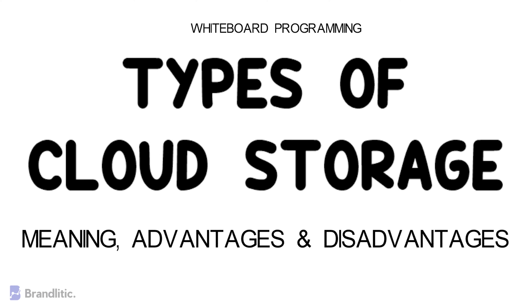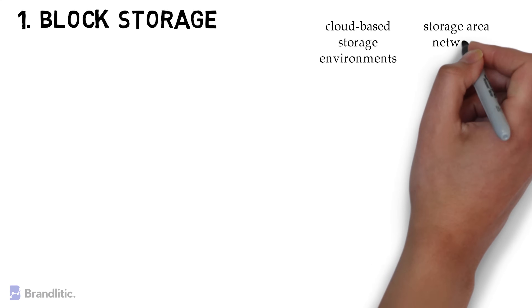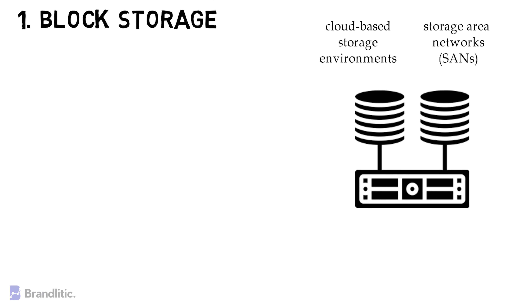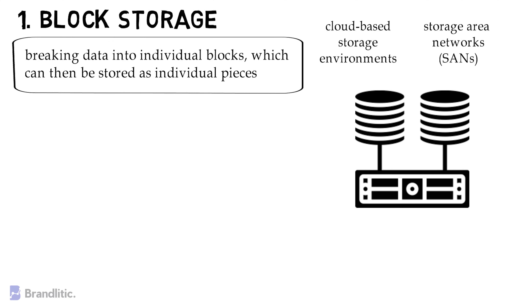When considering storing data in the cloud, you have 3 main cloud types available to choose from. The first one being Block Storage, which is a technology primarily used for storing data files in cloud-based storage environments or on Storage Area Networks, also called SANs. In the cloud, it is typically implemented through the attachment of a virtual disk to a cloud-based virtual machine. Block Storage uses the process of breaking data into individual blocks which can then be stored as individual pieces.